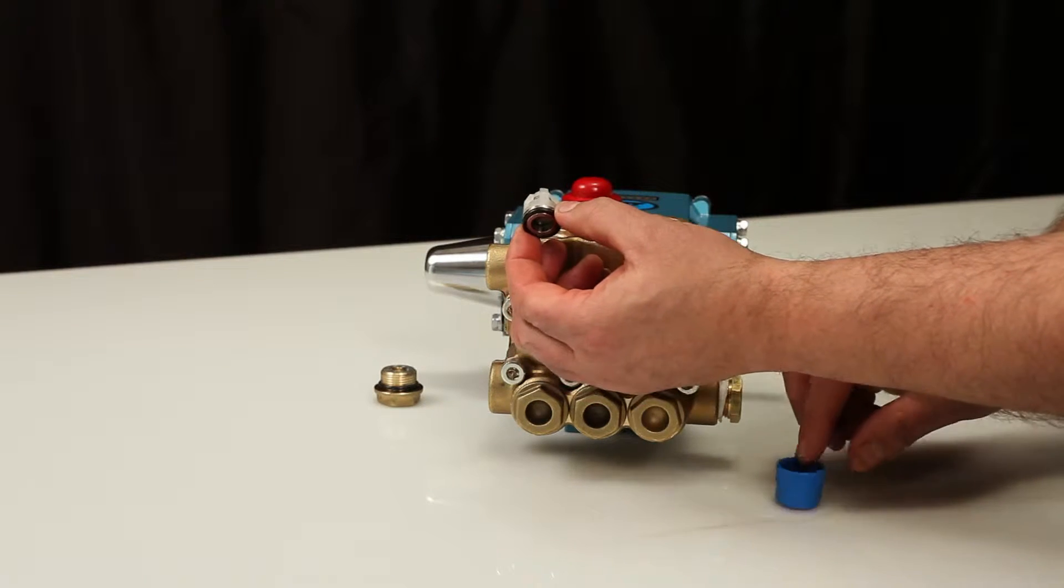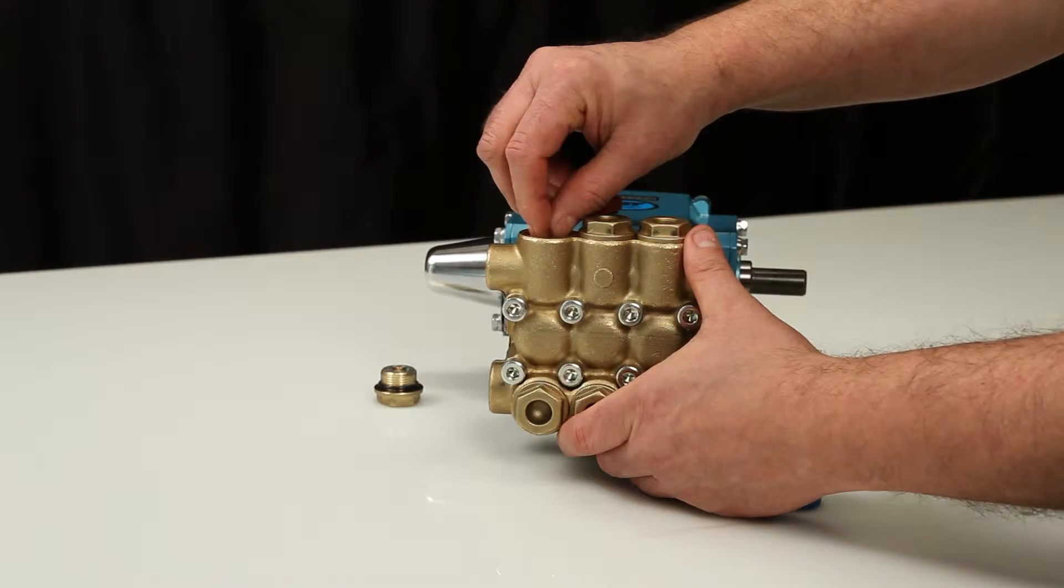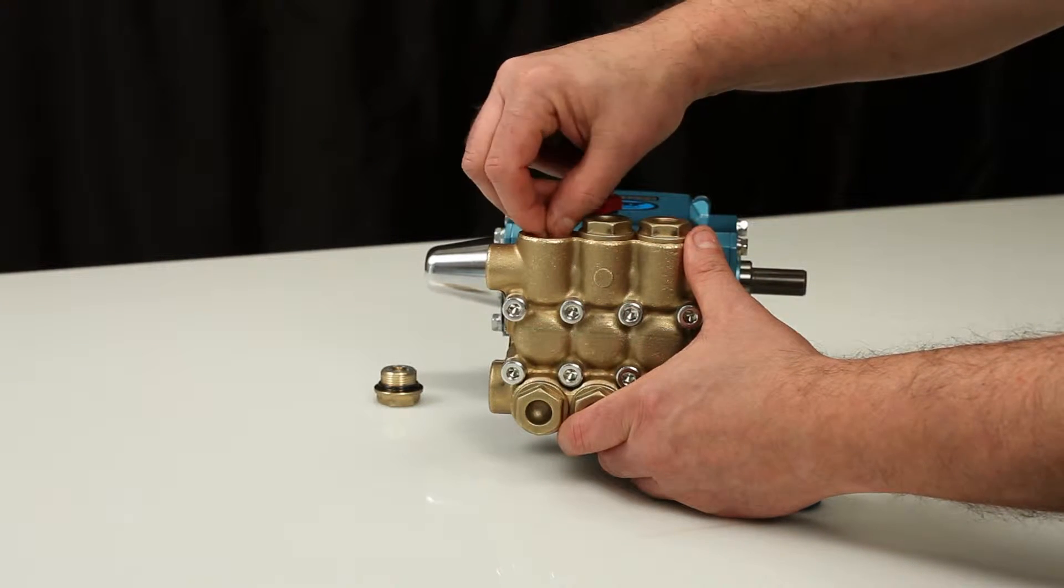Before installing the new valve assembly, lubricate the O-ring on the valve seat. Next, insert the valve assembly into the manifold and press into place.